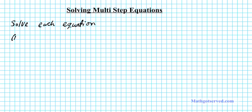For problem number one, we have the equation 15 plus 6x is equal to x minus 7 minus 8. Now before ever solving an equation, it's beneficial to examine what type of equation you have so you can know what your possible answers are going to be. This is an algebraic equation with variables on both sides.